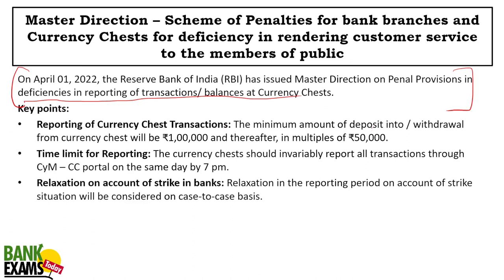The minimum amount of deposit into or withdrawal from a Currency Chest will be Rs. 1,00,000 and thereafter in multiples of Rs. 50,000. The time limit for reporting is on the same day by 7 p.m., which is an important fact. Relaxation is available on account of strike. All transactions should be reported by 7 p.m. on the CYM CC portal.